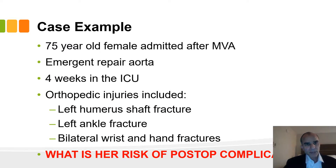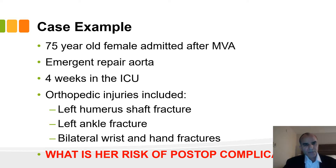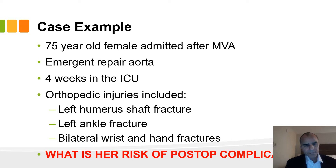We're going to start with a case. This is a 75-year-old female admitted after a motor vehicle accident — an actual case at our hospital. She had an emergent aorta repair and spent four weeks in the ICU, with multiple orthopedic injuries: humeral shaft, ankle fracture, wrist and hand injuries. What's the risk of a post-op complication? How do you figure it out?